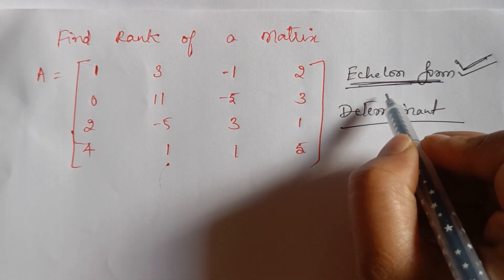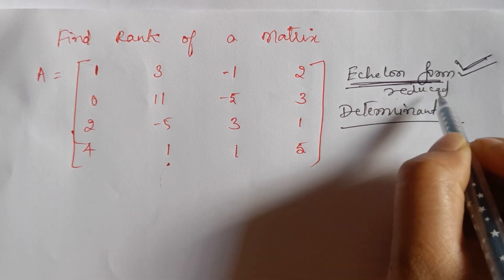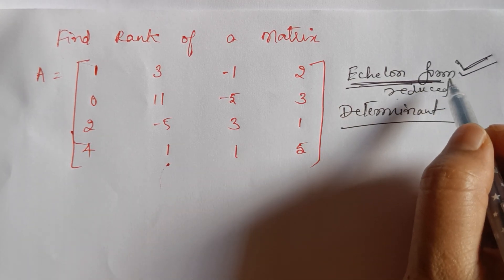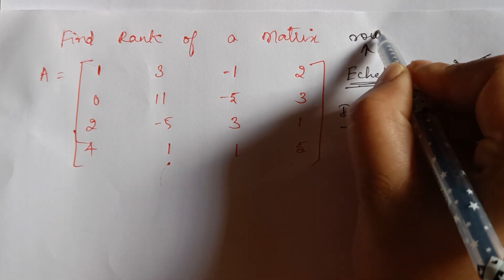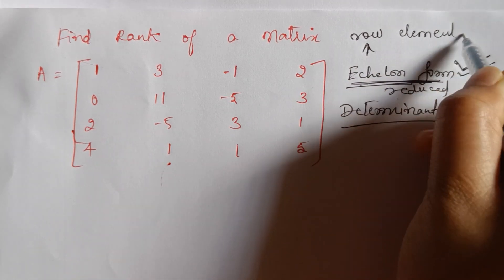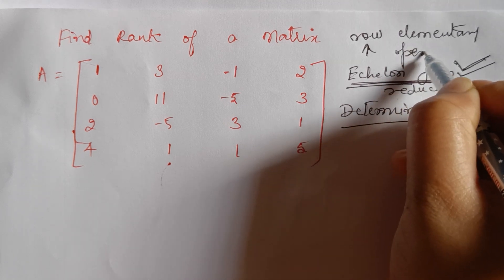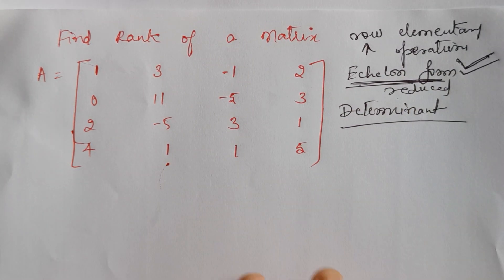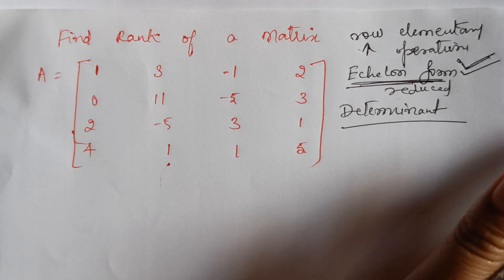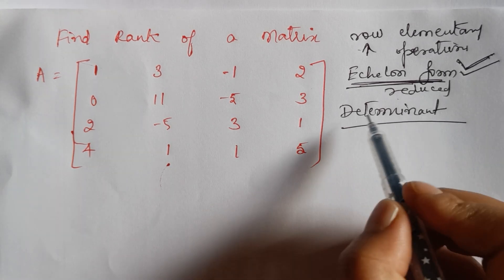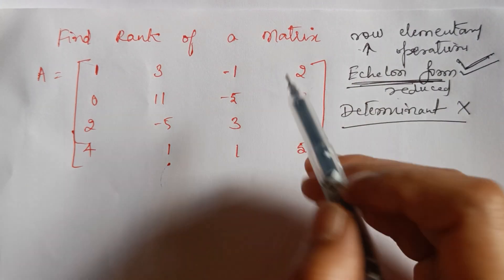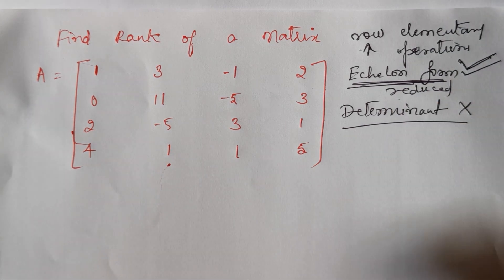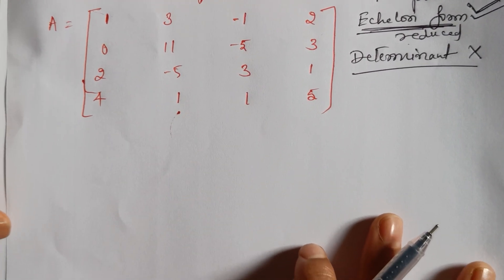If you don't know the echelon form, just check out my previous video where I have explained everything in detail. This is the default method we have to use, also called the reduced form of a matrix. Here we perform some elementary operations — specifically, row elementary operations are recommended in the echelon form. Determinants we do not use as the default method, but if they specifically ask you to find it using the determinant method, then you have to use that. Okay, so let's get started.